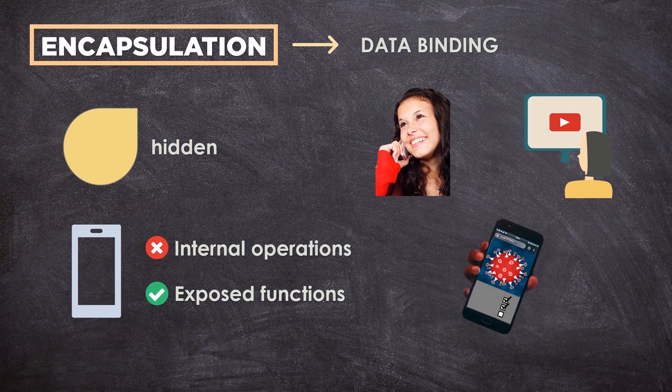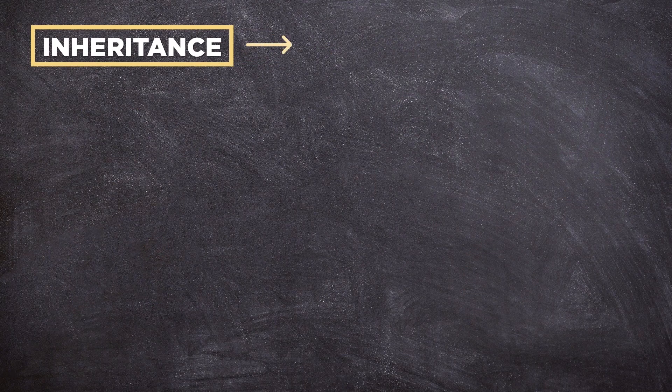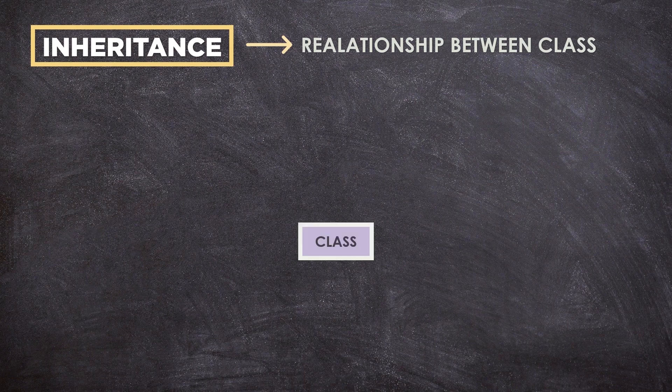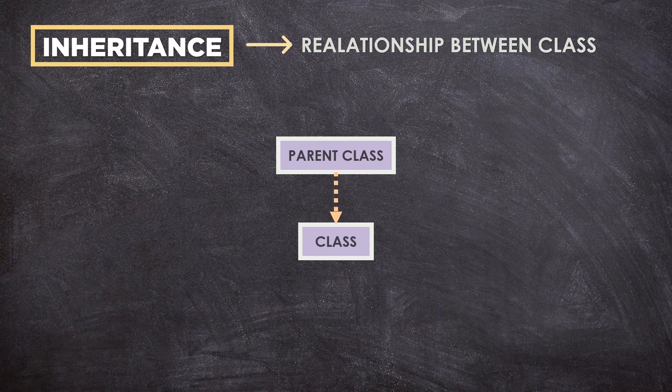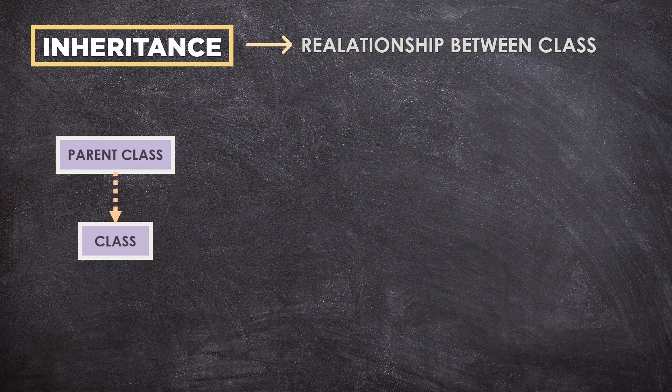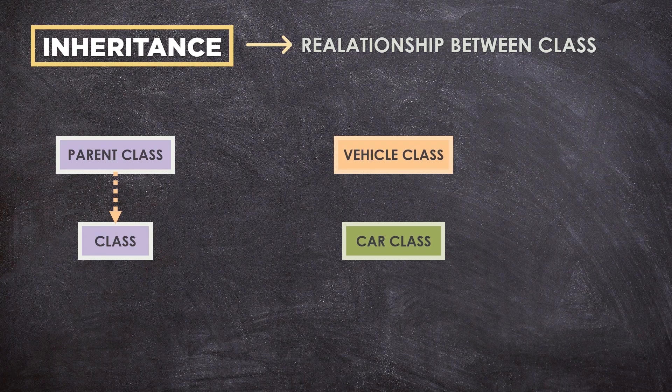Inheritance. Inheritance describes the relationship between two classes. A class can get some of its characteristics from a parent class and then add unique features of its own. For example, consider a vehicle parent class and its child class car.